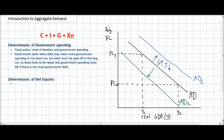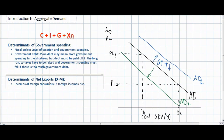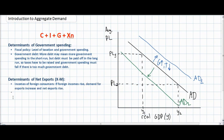The final component of aggregate demand is net exports, which refers to exports (X) minus imports in a nation. The main determinants of net exports include the incomes of foreign consumers — if foreign incomes rise, exports from a particular nation will increase and net exports will increase. If domestic consumer incomes rise, they may buy more foreign goods, causing imports to increase and net exports to decrease.